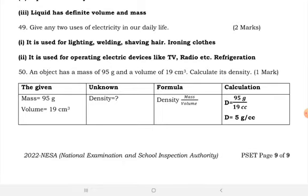Last question: an object has a mass of 95 grams and a volume of 19 cubic centimeters — calculate its density. Given: mass = 95 g, volume = 19 cm³. Density = mass over volume = 95 ÷ 19 = 5 grams per cubic centimeter.